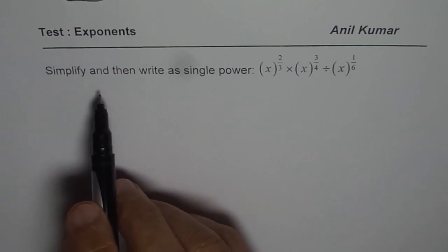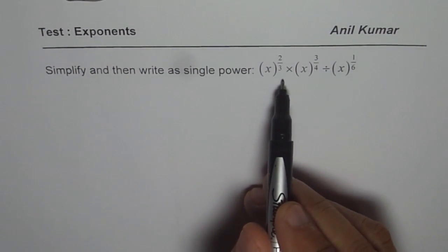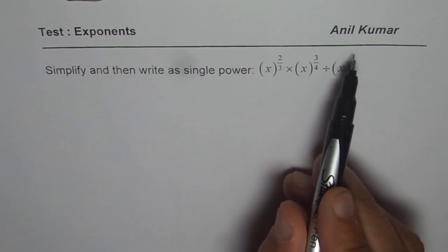So the question here is simplify then write as single power: x to the power of 2 over 3 times x to the power of 3 over 4 divided by x to the power of 1 over 6.